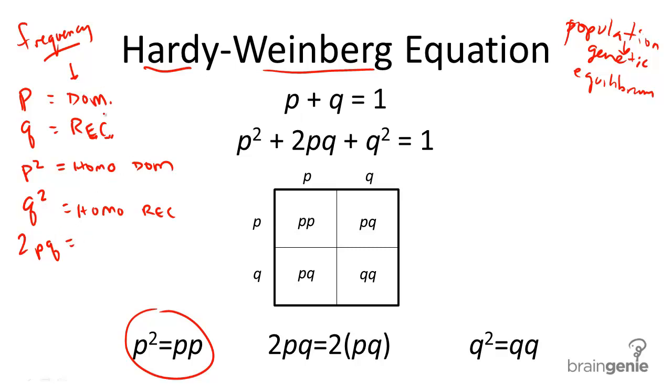And 2pq, or a dominant and recessive combination, refers to a heterozygous individual. So these are important to remember before we begin.